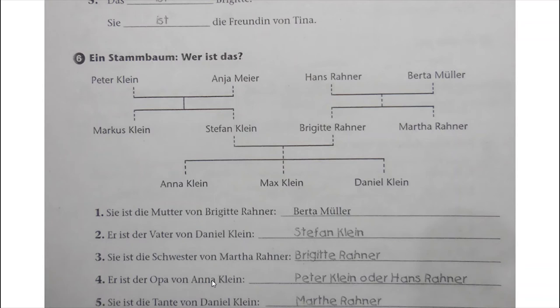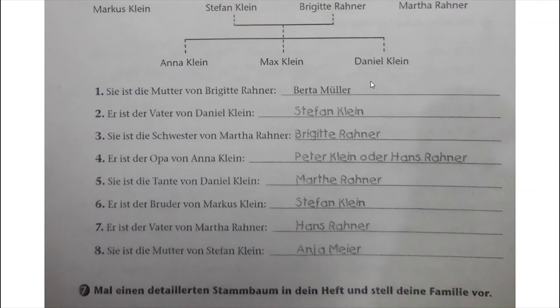Then number 4: Er ist der Opa von Anna Klein. Vater, Mutter, then Opa - Hans Rana or Peter Klein. Number 5: Sie ist die Tante von Daniel Klein. Brigitte Rana is the Mutter, then Martha Rana is the Tante. Er ist der Bruder von Markus Klein. Markus Klein - Stefan Klein is the Bruder. Then: Er ist der Vater von Martha Rana - Hans Rana.